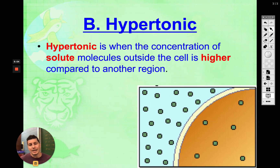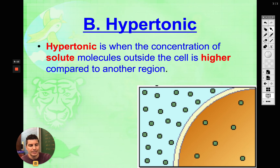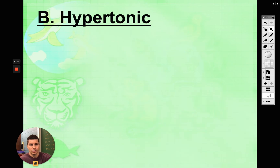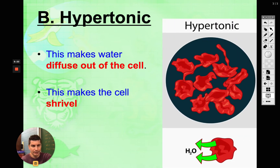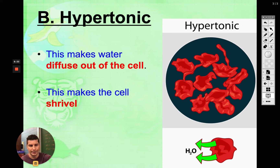Our second example: if the solution is hypertonic, the solution has more solute than the cell — that is hypertonic — which means the cell would be hypotonic. This makes water diffuse out of the cell and the cell will shrivel. Because the solvent is going to move wherever there is more solute. So if there's more solute outside of the cell, the water is going to leave the cell.